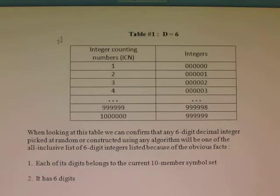Table 1. When looking at this table, we can confirm that any 6-digit decimal integer picked at random or constructed using any algorithm will be one of the all-inclusive list of 6-digit integers listed because of the obvious facts: